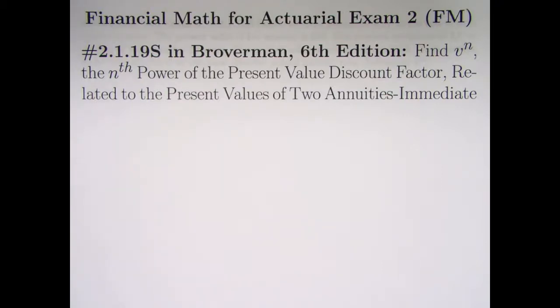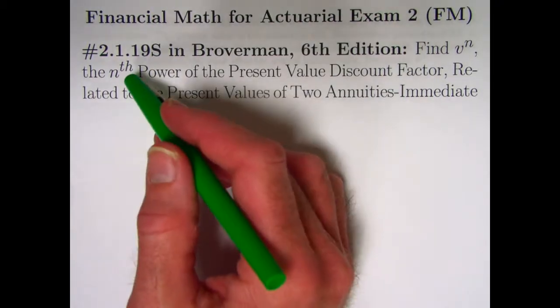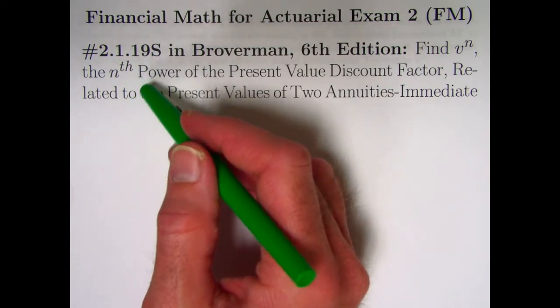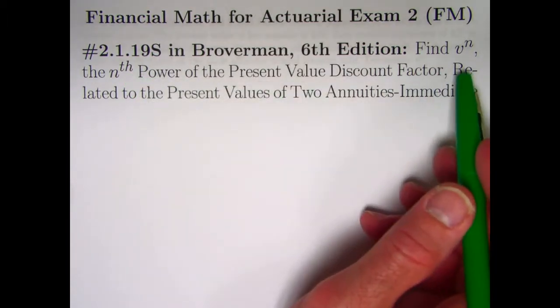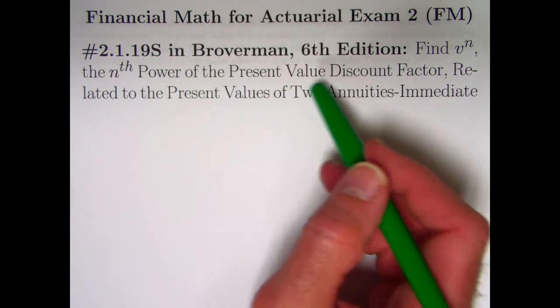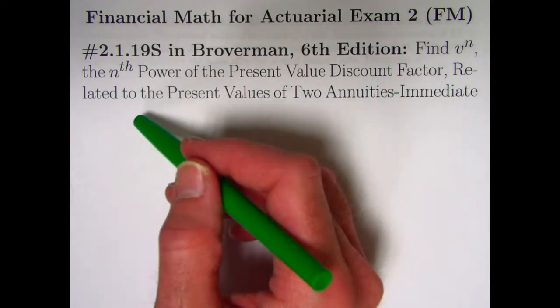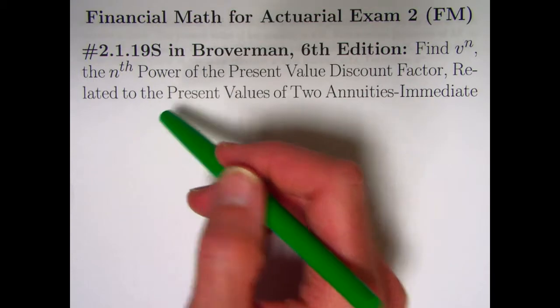In this video on financial math for actuarial exam 2, we'll be taking a look at problem 2.1.19s. We'll be finding v to the n, which is the nth power of the present value discount factor, that's going to be related to the present values of two annuities immediate.